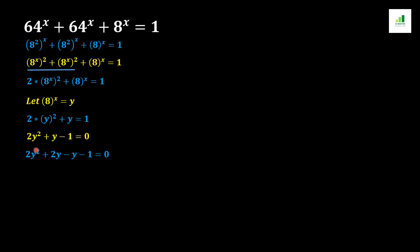When we factorize this equation we get 2y squared plus 2y minus y minus 1 equals 0. The middle term y is split into plus 2y and minus y, because the constant term c is negative, meaning the two factors of b must have opposite signs. When we multiply 2y by minus y we get minus 2y squared, which matches the product of 2y squared and minus 1.